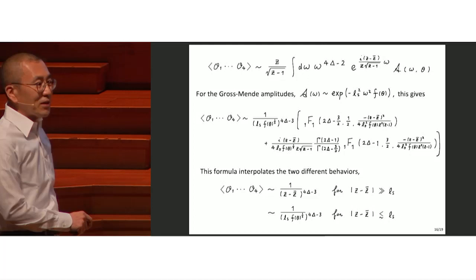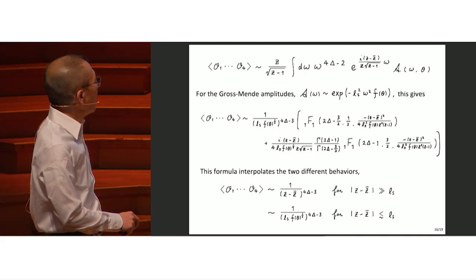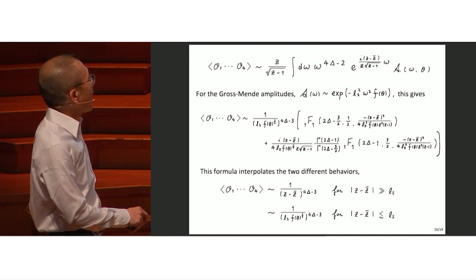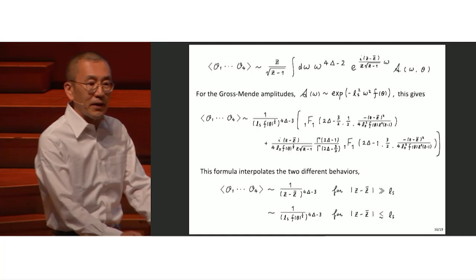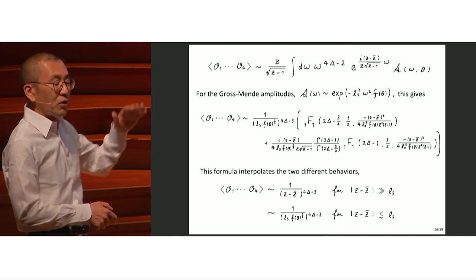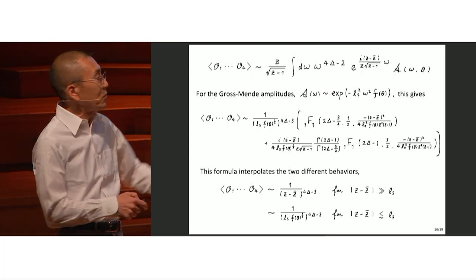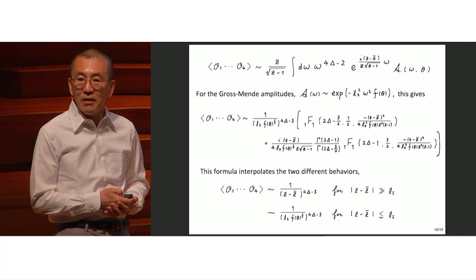If you plug in the Gross-Mende amplitude, you can carry out the omega integral explicitly and express everything in terms of confluent hypergeometric functions. This formula very nicely interpolates between the apparent bulk point singular behavior to the smooth ultraviolet behavior, basically cut off by the Gross-Mende type behavior for distances shorter than the string scale. Regarding strong gravity effects: in M-theory there is no string effect, but when the theory is embedded in string theory, the string effect washes out the strong gravity effect.